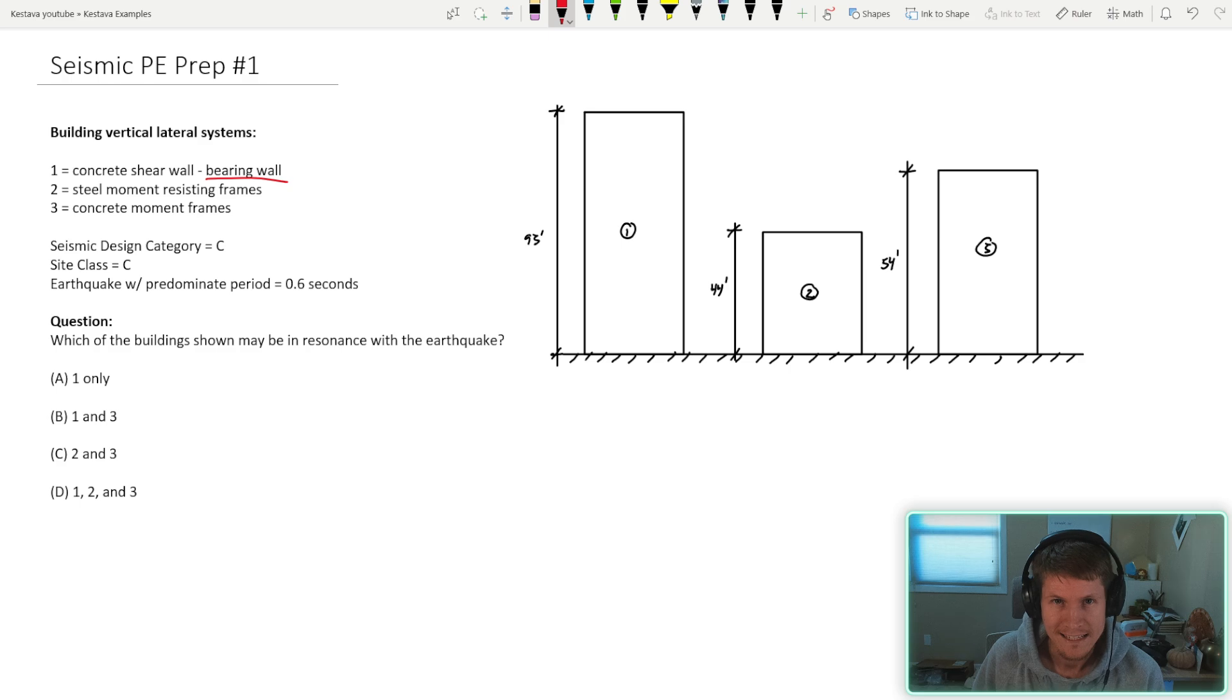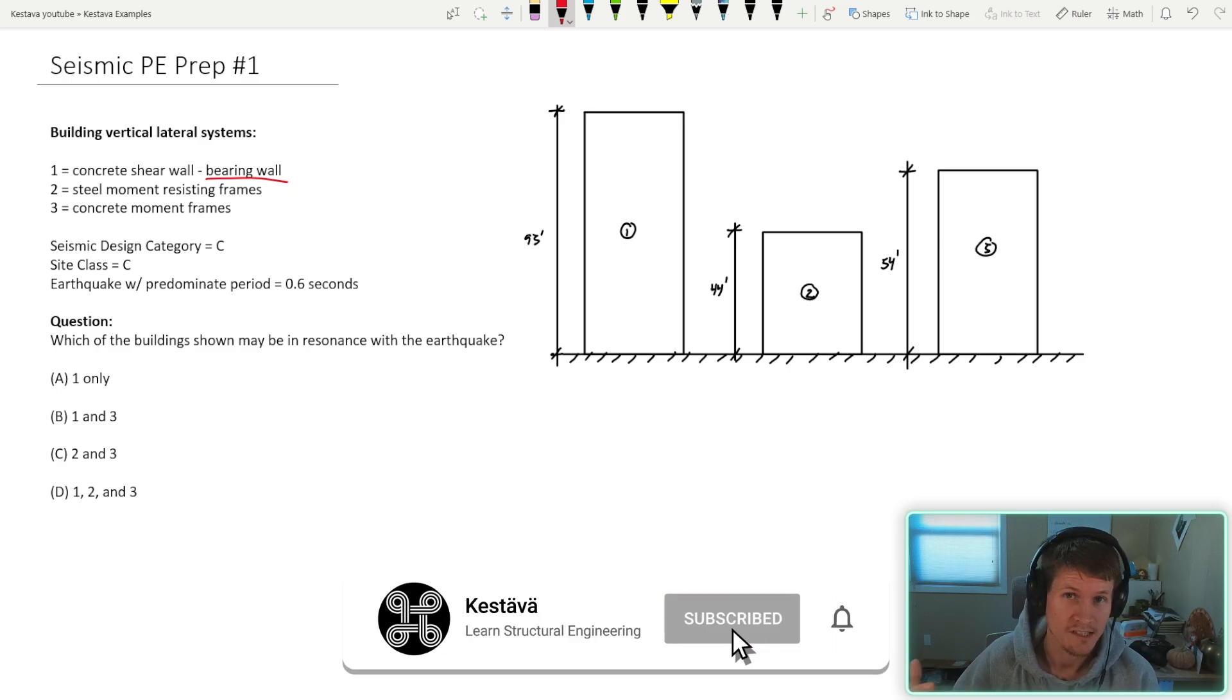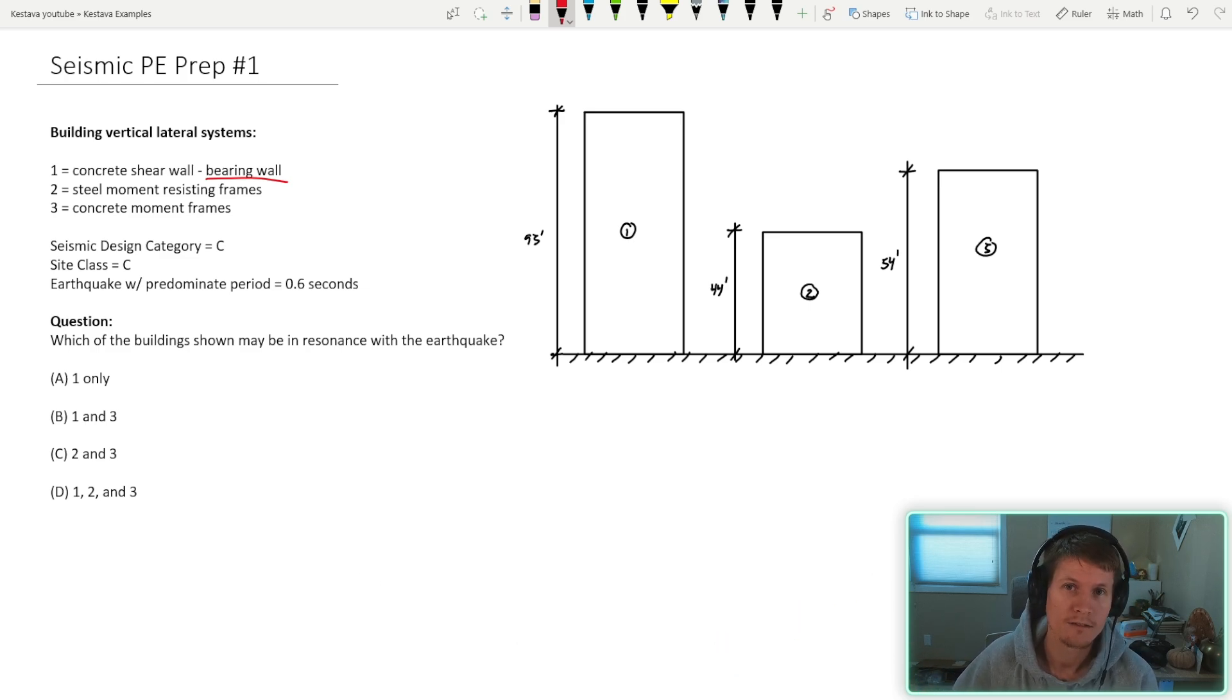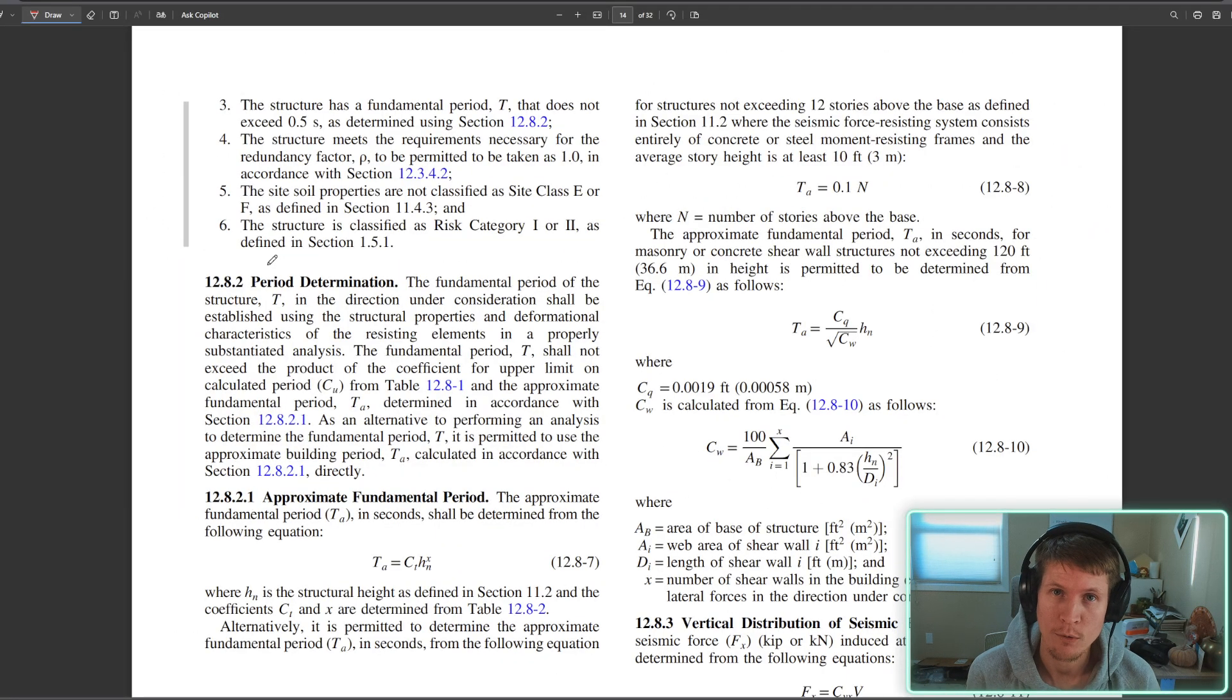You're going to need the ASCE 7. Today's problem is using the ASCE 7-16. In the not too distant future we're going to jump to the 7-22, but for now code cycle 7-16. We're finding ourselves here in 12.8.2 because we need to determine the fundamental period of each of our three structures.